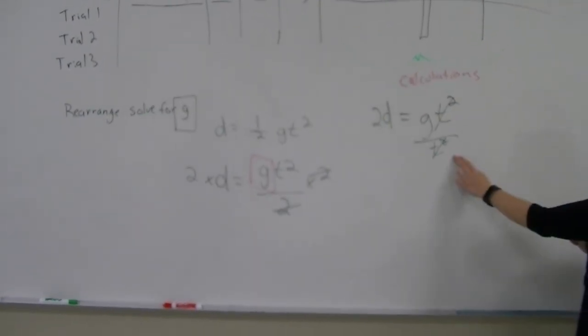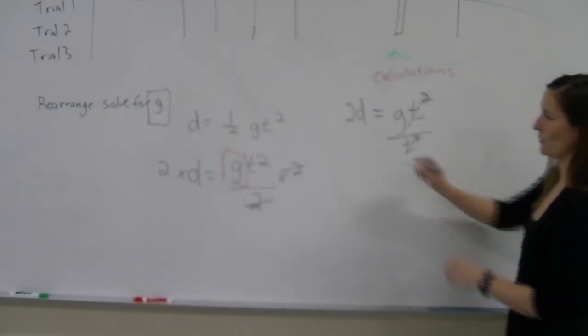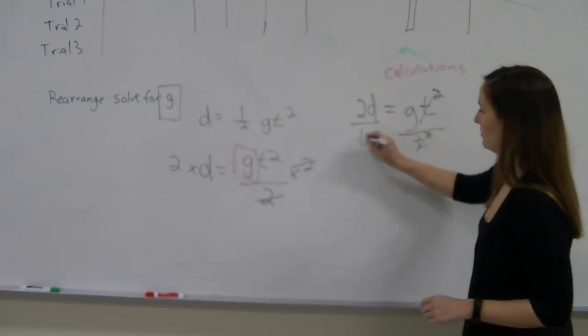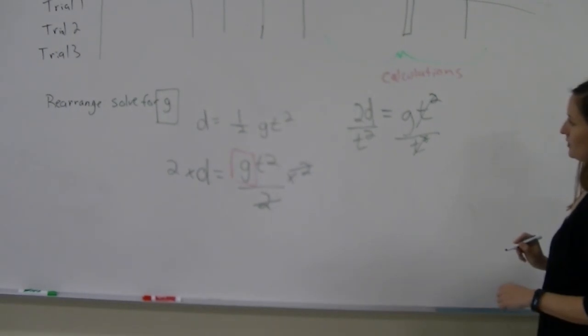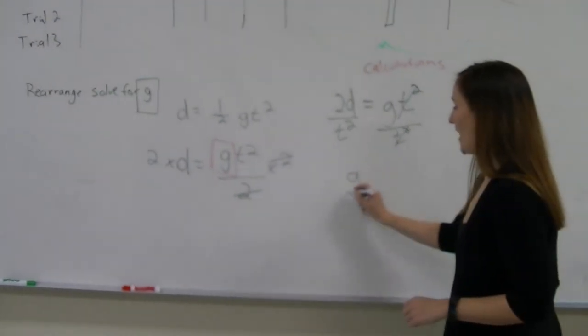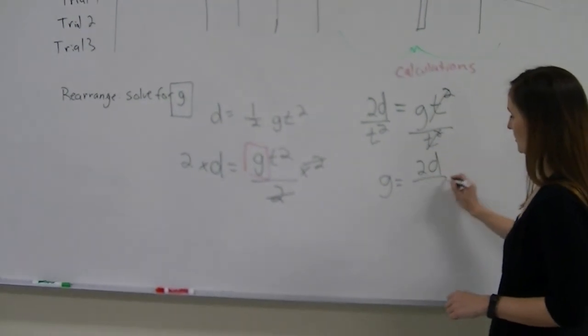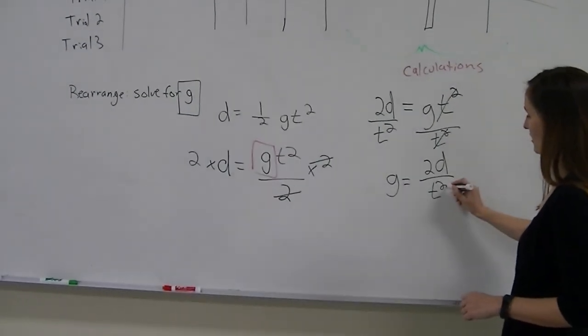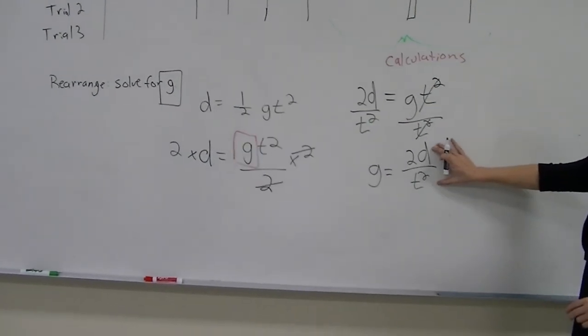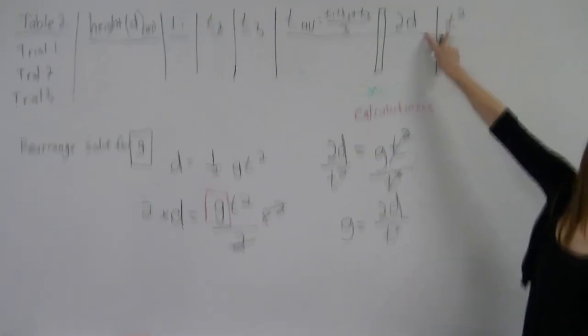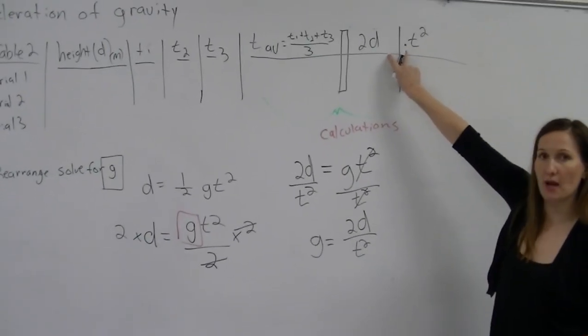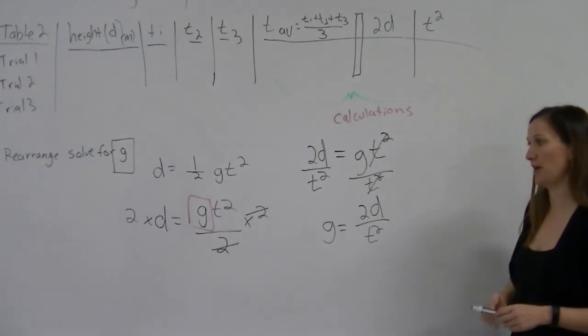Whatever I do to one side of the equation, I have to do to the other. So I'm also going to divide this side by T squared. So now I get G by itself on one side of the equation, and then I get 2D divided by T squared. And notice these are the two columns that you calculated in your table. So you will be calculating the rate of gravity for every trial, and comparing it to the actual rate.